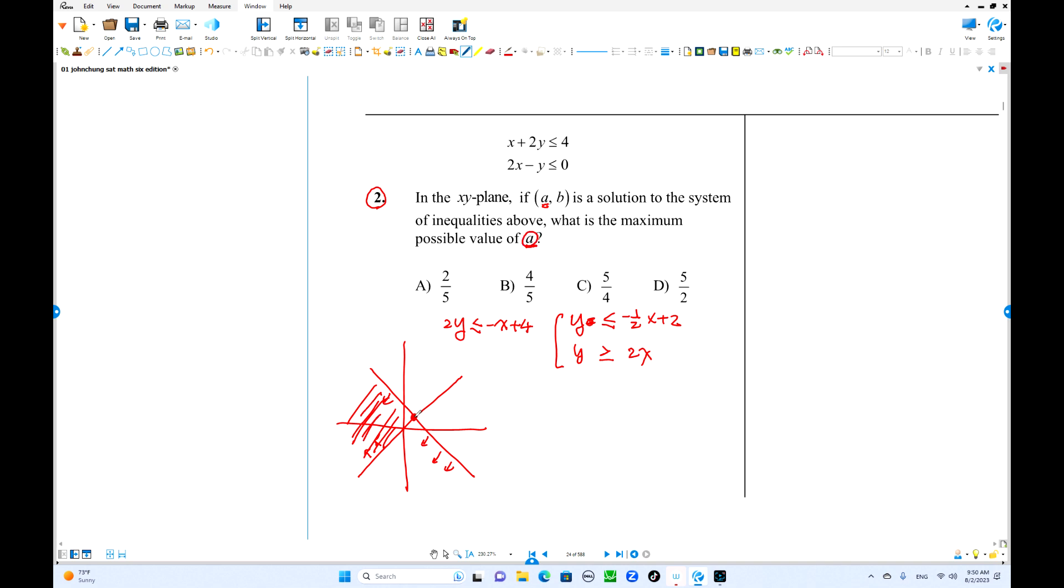We're going to find the intersections. This is the maximum value of A because A and B, A is x coordinate. This is the maximum value of x. That's why we always think about intersection. Solve this one. Negative 2x equals negative 1 over 2x plus 2. Integer equation is better, right? So plus 1 half x both sides, 5x equals 4, x equals 4 over 5.